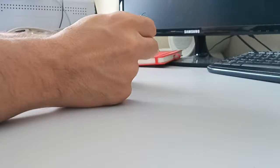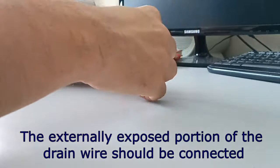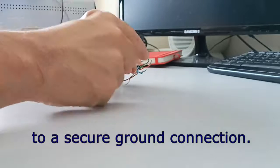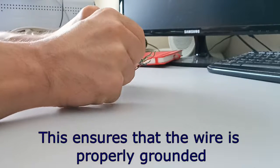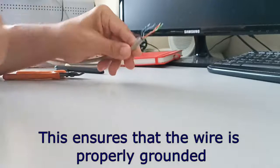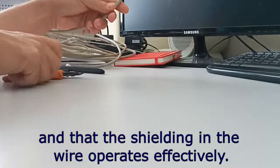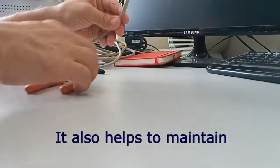The externally exposed portion of the drain wire should be connected to a secure ground connection. This ensures that the wire is properly grounded and that the shielding operates effectively. It also helps to maintain the two ends of the wire at the same voltage with respect to ground.